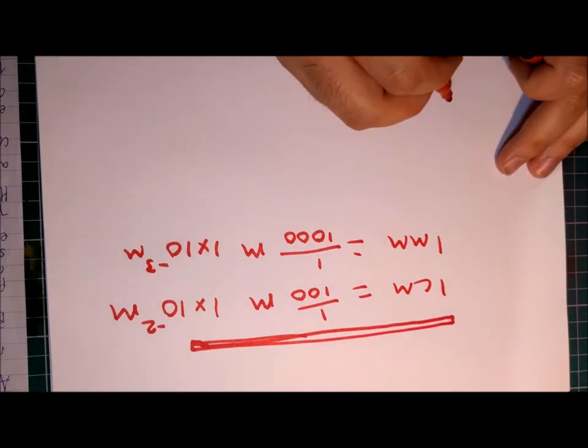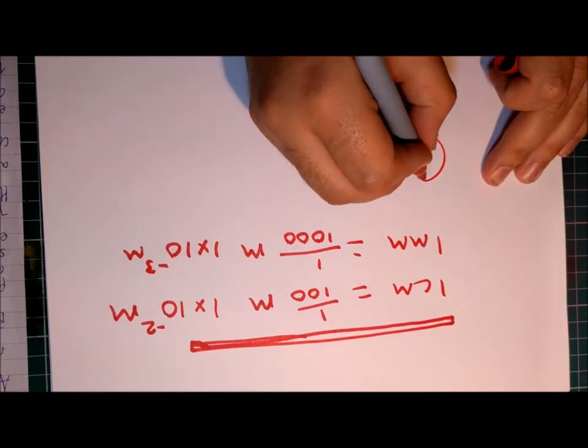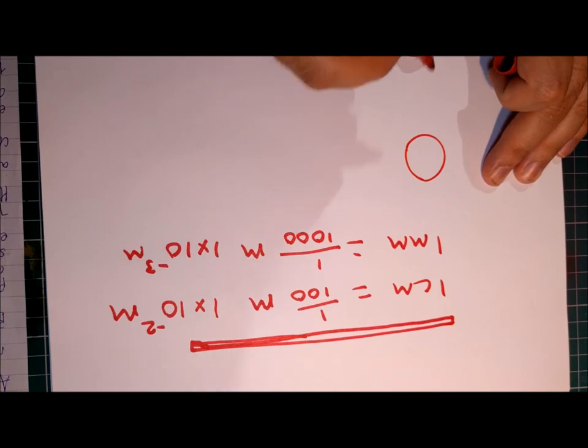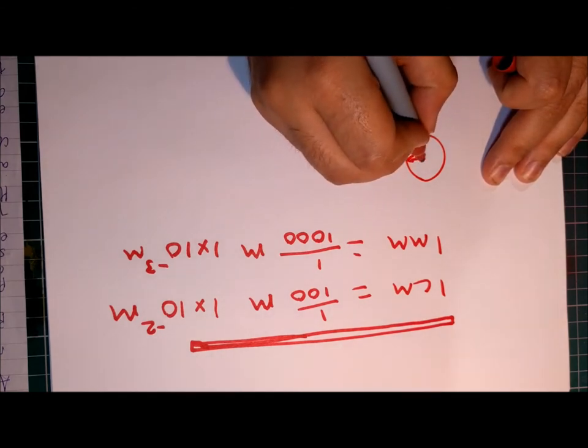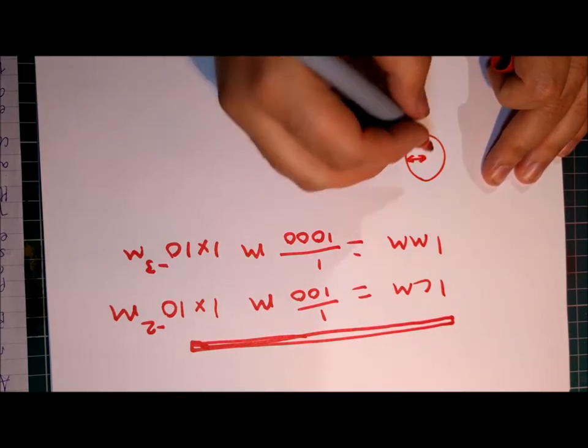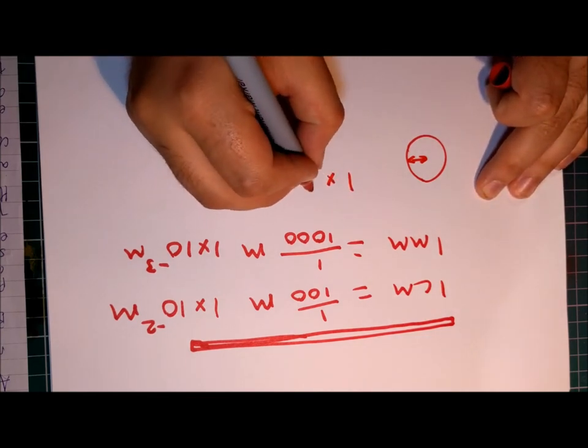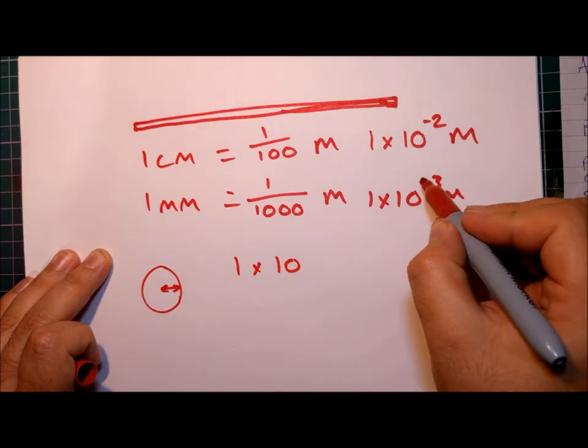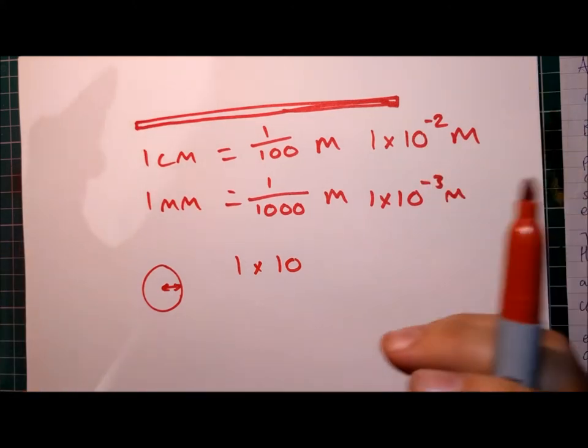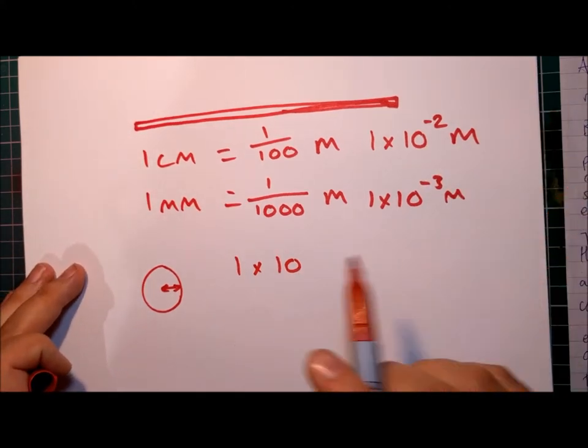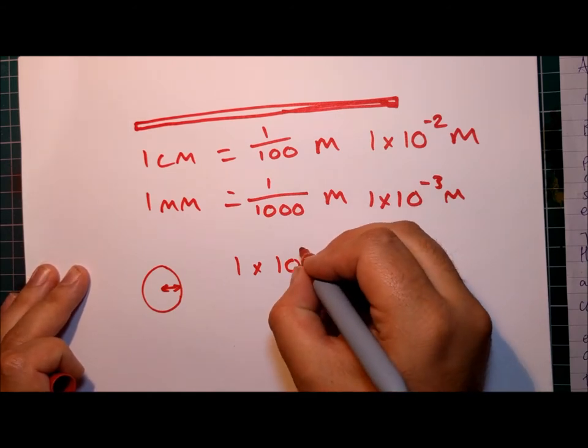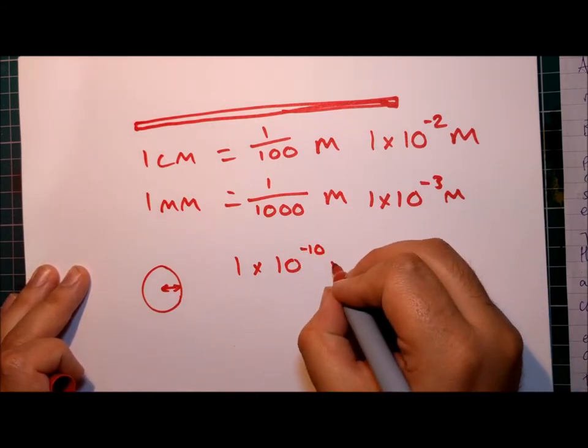Now to put this in context then, the radius of an atom. So if this is our atom drawn nice and simply, then this distance here, the radius, the radius of an atom is one times ten... The larger this negative number gets here, the tinier our fraction is.